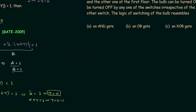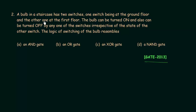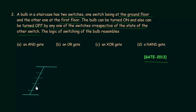Now we will solve the second problem, taken from the GATE 2013 paper. A bulb in a staircase has two switches — one at the ground floor and one at the first floor. The bulb can be turned on and also turned off by any one of the switches, irrespective of the state of the other switch. We have a staircase connecting the ground floor and the first floor. The switch at the ground floor is called SG and the switch at the first floor is called S1.